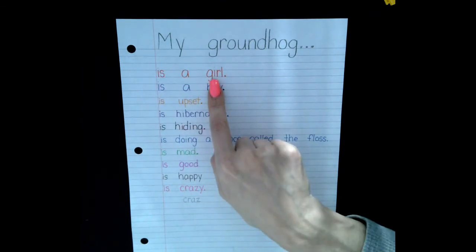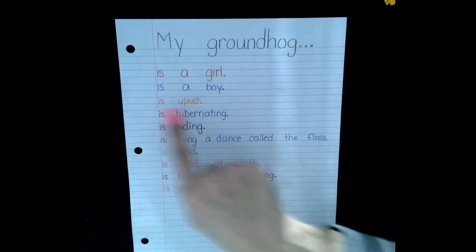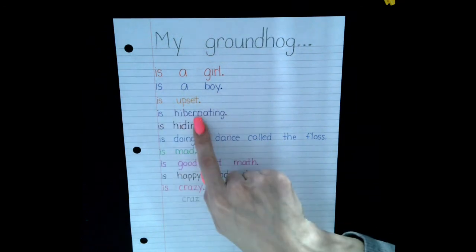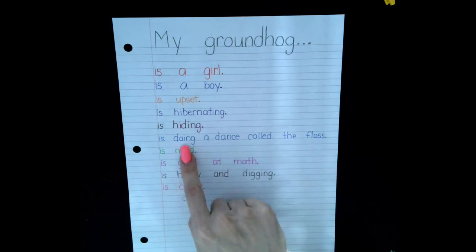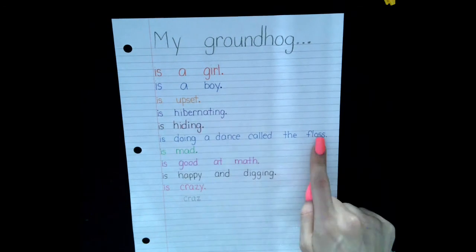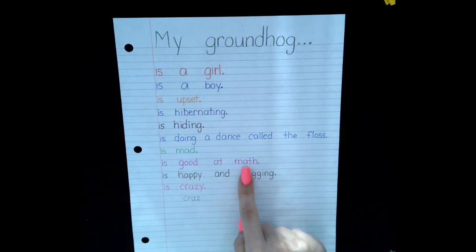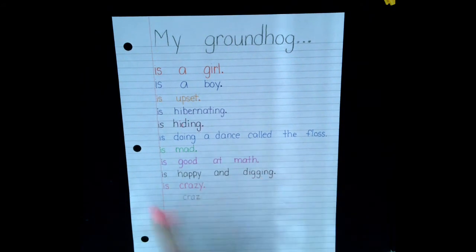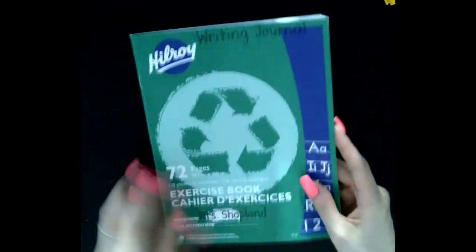Is a girl. Is a boy. Is upset. Is hibernating. My groundhog is hiding. Is doing a dance called the floss. Is mad. Is good at math. Is happy and digging. Is crazy. Those are some ideas to help with your writing.